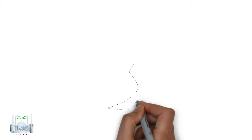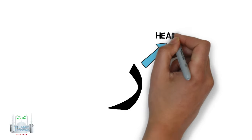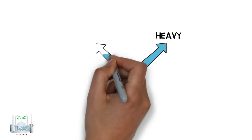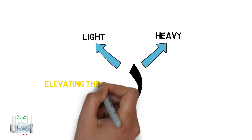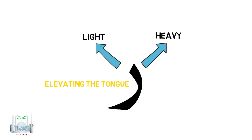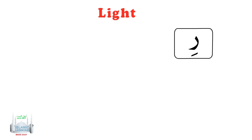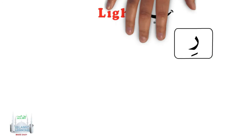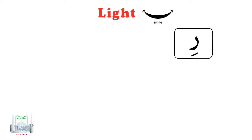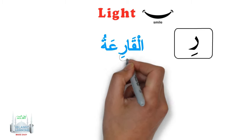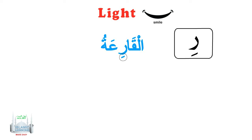The letter Ra can be heavy and light at times, but when the Ra is heavy, we give it the quality of heaviness by elevating the tongue. If the Ra has a kasra, it will read light — it is just like when you smile: 'ri'. For example, the Ra has a kasra, it reads as al-qari'ah with a smile on the Ra.